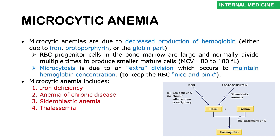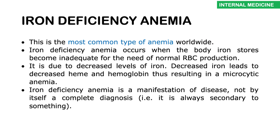Because there's not enough hemoglobin inside the red blood cells, it's as if they undergo an extra division and become smaller than they should be, maintaining a reduced hemoglobin concentration while keeping the cell pink. Generally the MCV is between 80 to 100 femtoliters, though some labs use 80 to 96. In microcytic types of anemia, the MCV will be less than 80 femtoliters.